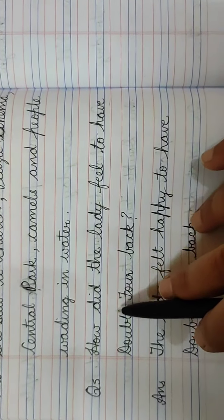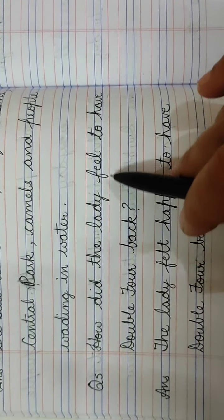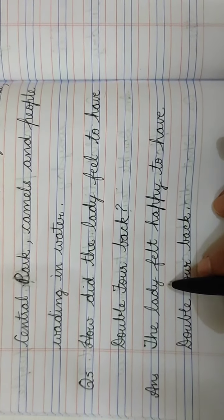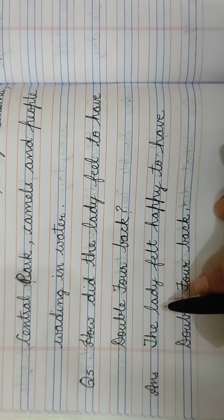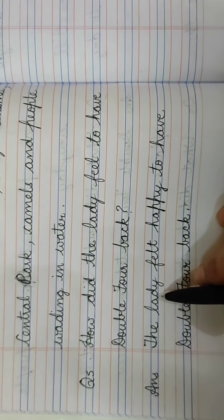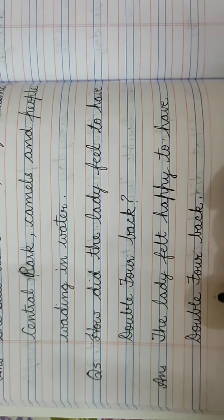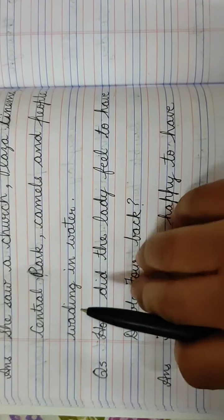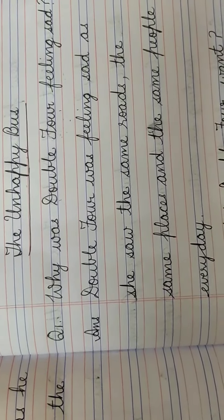Now the next question number 5 is, how did the lady feel to have Double 4 back? The answer is, the lady felt happy to have Double 4 back. Full stop. Children, I will show you the question answers once again. Go through them and see if you have made any mistake. Just correct it. And wherever capital letters are used, write capital letters only.